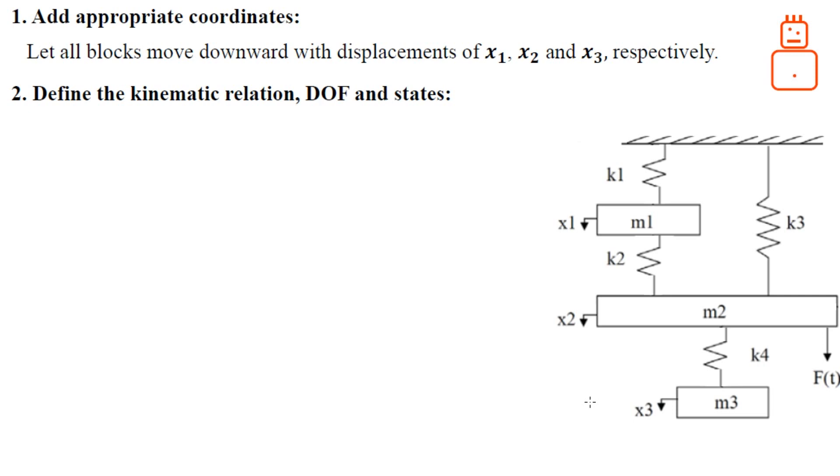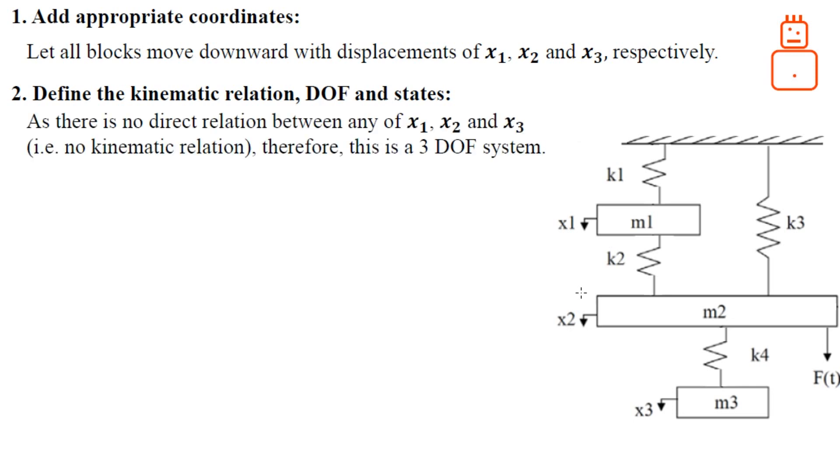Let's proceed to the second step, which is defining the kinematic relations, degree of freedom, and states. As you can see, because of these springs k2 and k4, you cannot relate these displacements one to each other. There is no relationship between them, therefore this is a three degree of freedom system.